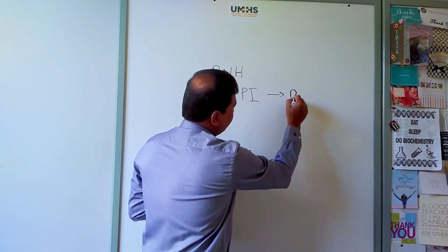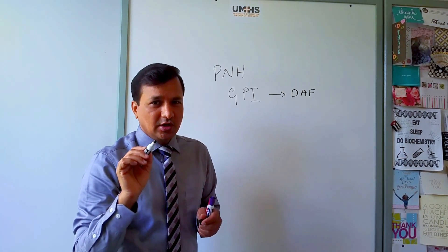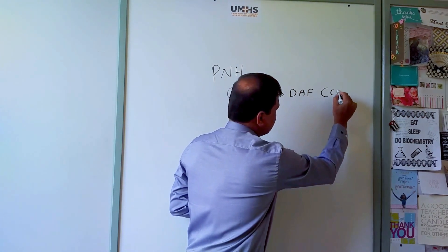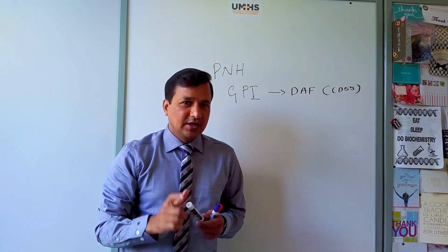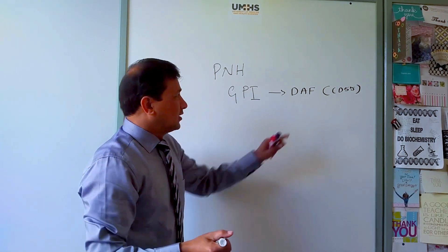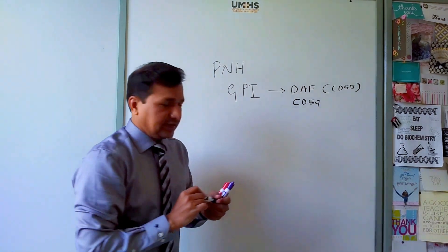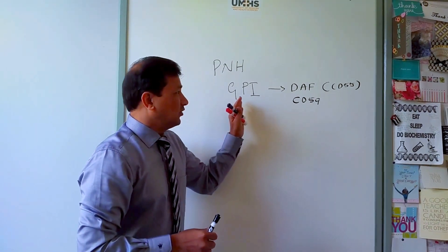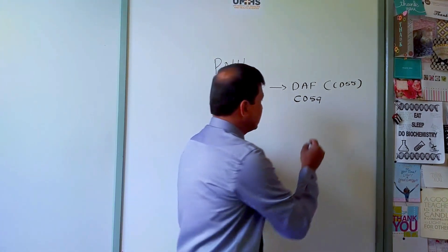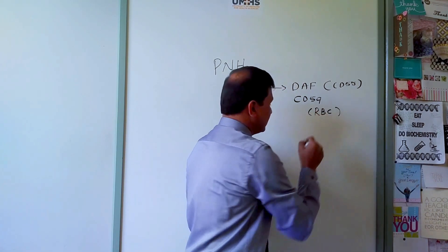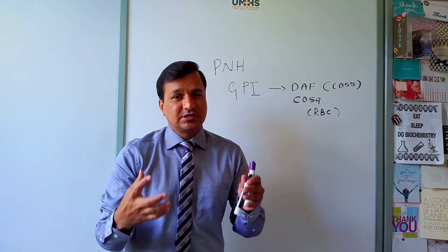DAF is Decay Accelerating Factor, also referred to as CD55. Another molecule in this category is CD59. So CD55 (DAF) and CD59 are the two molecules that use glycophosphatidylinositol anchors to bind to the plasma membrane, especially in red blood cells.